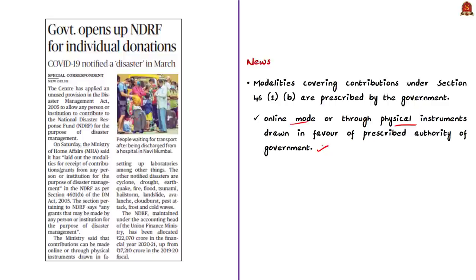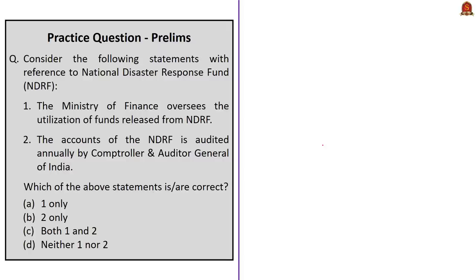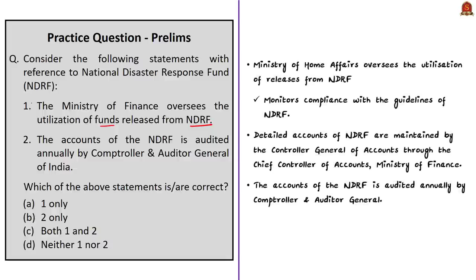Let us take up the given NDRF question. Two statements are given: Statement 1 says the Ministry of Finance oversees the utilization of funds released from NDRF — this is incorrect, as it is the Ministry of Home Affairs that oversees utilization and monitors compliance with NDRF guidelines. Statement 2 says accounts of the NDRF are audited annually by the Comptroller and Auditor General of India — this is correct. Therefore, the correct answer is option B, statement 2 only.